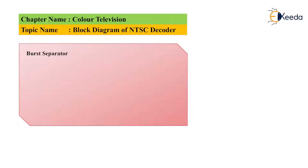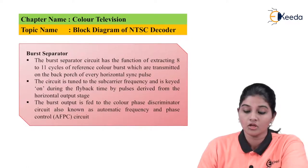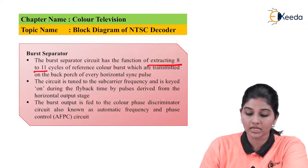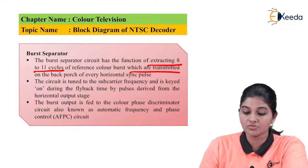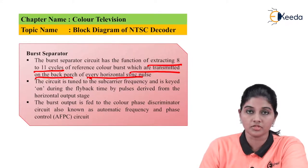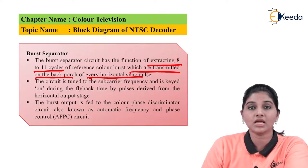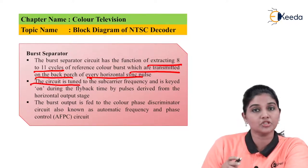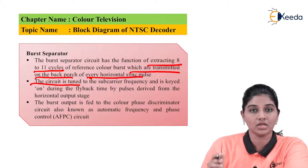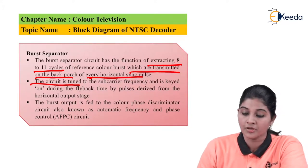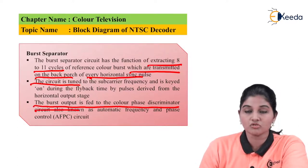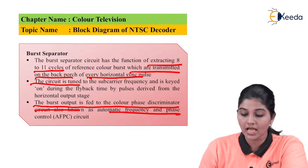The next circuit in the NTSC decoder is the burst separator. The burst separator circuit has the function of extracting 8 to 11 cycles of the reference color burst, which are transmitted on the back porch of every horizontal sync pulse. The horizontal sync pulses are added after each line scan. The circuit is tuned to the subcarrier frequency of 3.579545 MHz. The burst output is further given to the phase discrimination circuit, also known as the automatic frequency and phase control circuit.